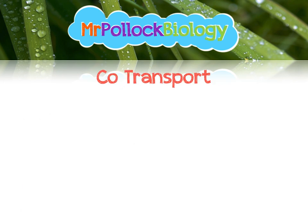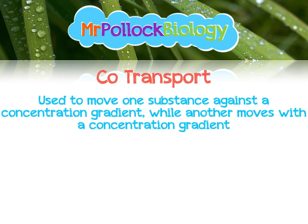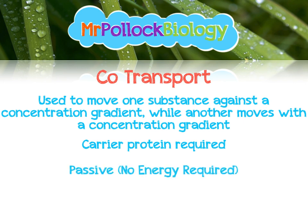Let's look at co-transport. This is used to move one substance against a concentration gradient, while another moves with a concentration gradient. The favourable concentration gradient causes the substance being moved against its concentration gradient to be dragged through. This requires a carrier protein and it's a passive process, meaning no ATP is required. A great example of this is the sodium-glucose co-transporter, or the symporter — or at a higher level, GLUT1 or GLUT2.